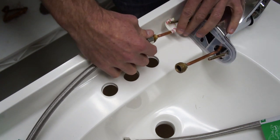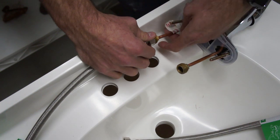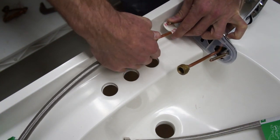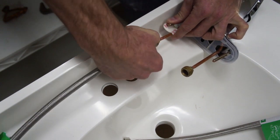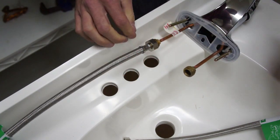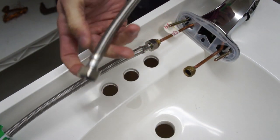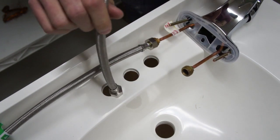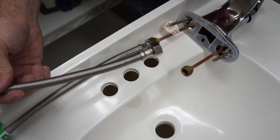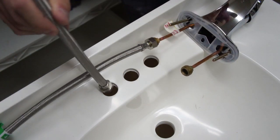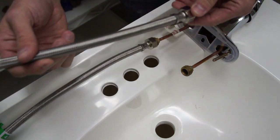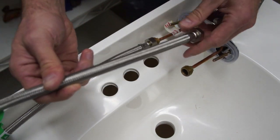One thing you're going to want to check before you do it the way I'm doing it is that these connection fittings fit down through these holes. It makes it a lot easier if you can put these on before you put the faucet on. But if yours don't fit through the holes, then you'll have to put the faucet on and then put the connections on from the bottom, and I'll talk to you about that when we get down there.